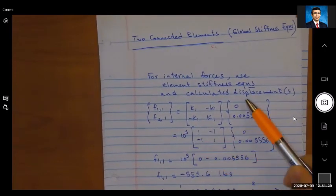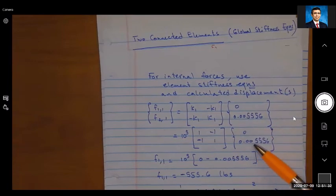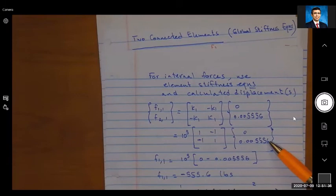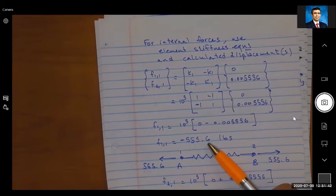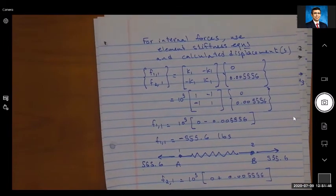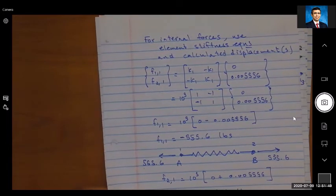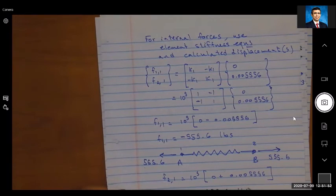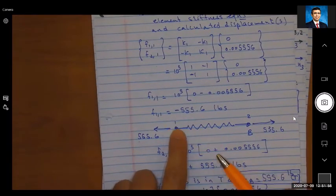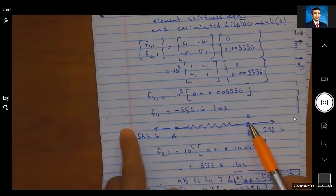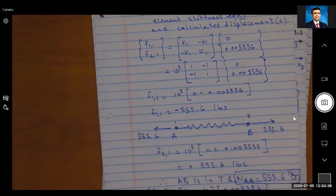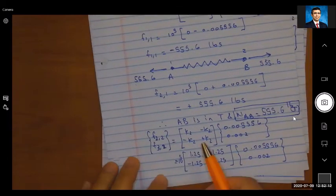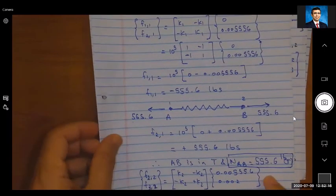And that's what I'm going to do here. So I'm going to use k1 times the displacement at one, displacement at two. We find ub to be 0.00556. I get f11 to be minus 555.6 pounds, f21 is a plus 555.6. Why do I have different signs? Because if you look at one, a negative means it's going in the negative direction. If you look at two, positive means going in the positive direction. What does that imply? What's happening in AB? It's in tension, which is what we expected.